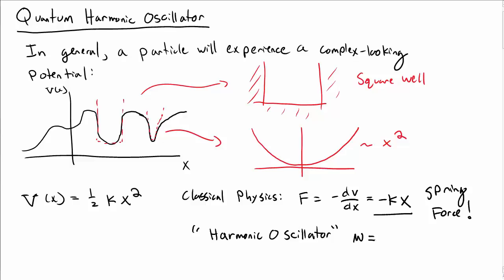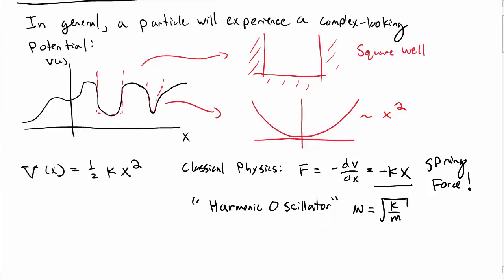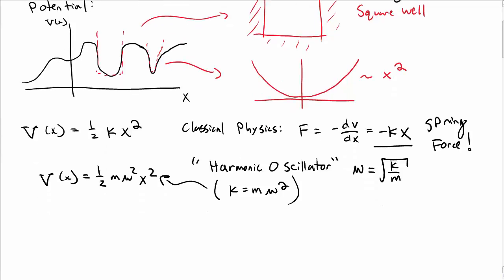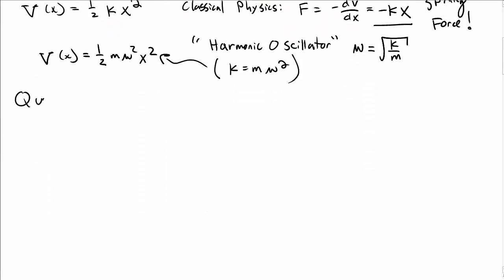Because it is an oscillator like a spring, it has an oscillation frequency of square root of k over m, where m is the mass of the particle. We typically rewrite this as k equals m omega squared, so the potential is one half m omega squared x squared, just getting rid of the spring constant and just talking about the frequency.